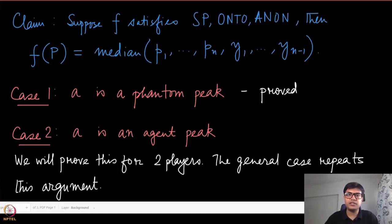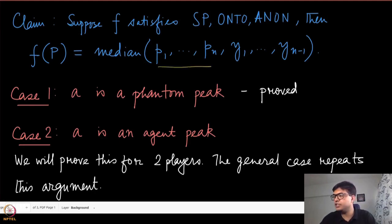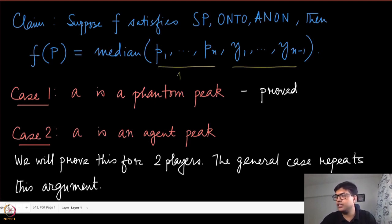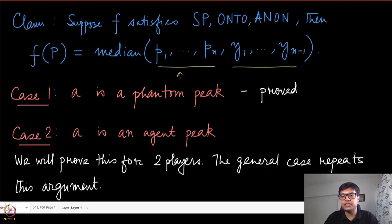Let us now prove the other case of this proof, where the median of all the agent peaks and phantom peaks is an agent peak — so one of these here. What we are going to do is prove this for two players only. The general case is a little non-trivial extension but the idea of the proof remains the same.